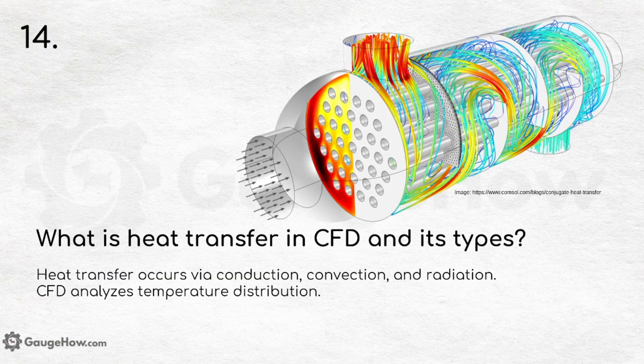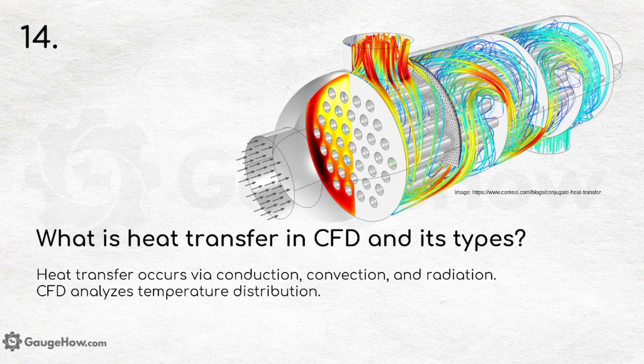What is heat transfer in CFD and its types? Heat transfer occurs via conduction, convection, and radiation. Students in mechanical engineering typically study heat and mass transfer before CFD, so it's important to bridge that gap, since CFD also analyzes temperature distribution.